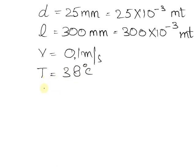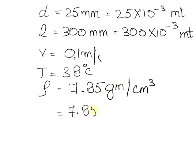Relative density that is rho is given as 7.85 gram per centimeter cube which can also be written as 7.85 into 10 raised to power 3 kilogram per meter cube.